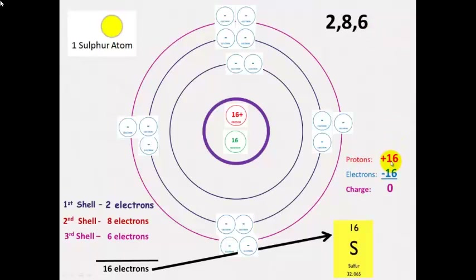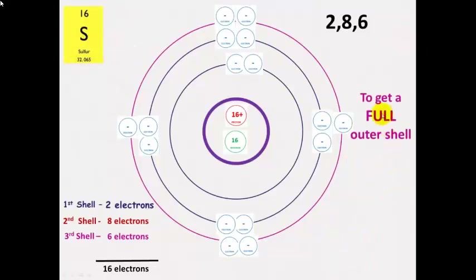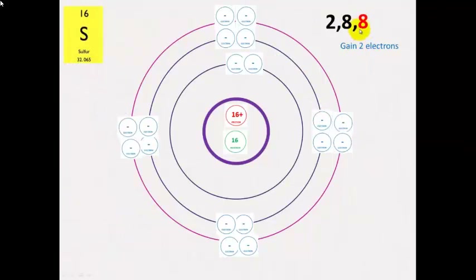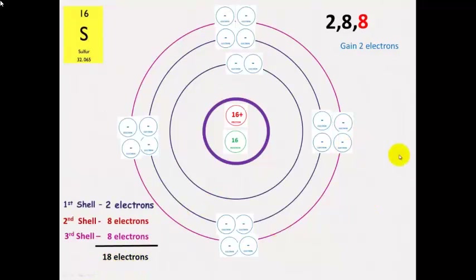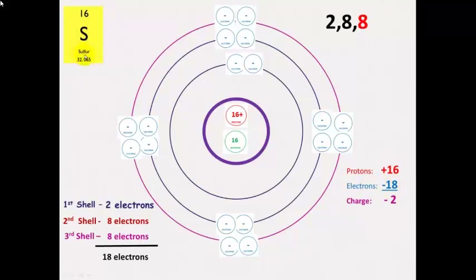Sulphur has 16 protons and 16 electrons, so it has an overall charge of 0. However, to get a full outer shell it wants to gain 2 electrons. It gains those 2 electrons to get 8 in its outer shell. We now have a total of 18 electrons, which gives the sulphide ion a charge of negative 2. So the sulphur atom becomes the sulphide ion with an S²⁻ charge, representing those extra 2 electrons.